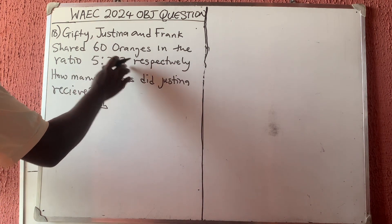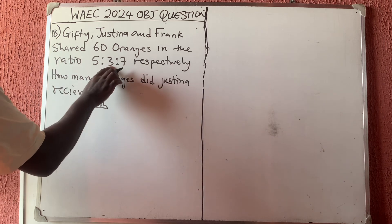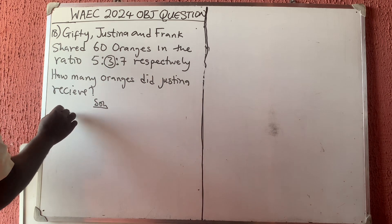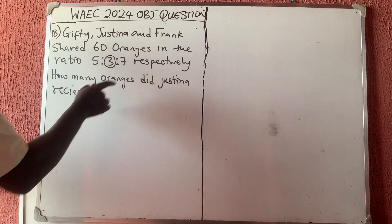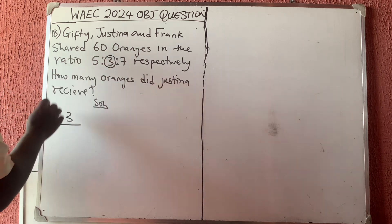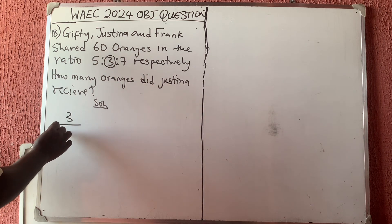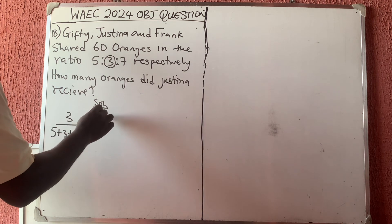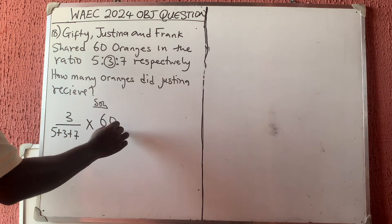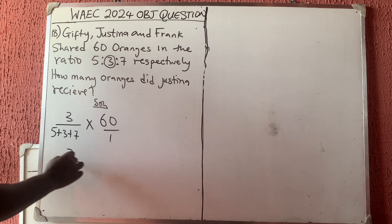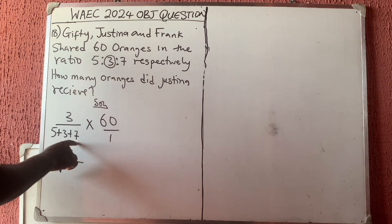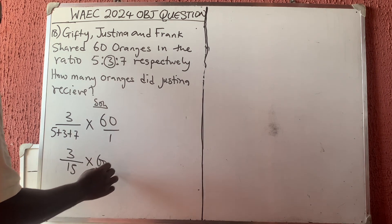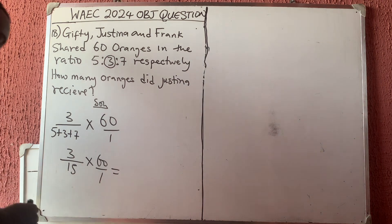To get the number of oranges Justina received, we take her ratio which is 3, over the total ratio, which is 5 plus 3 plus 7 — that gives us 15. Then we multiply by the total number of oranges being shared: 3 over 15, times 60.